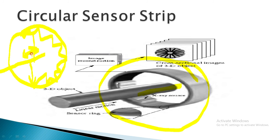Such an arrangement we have already seen from the previous classes — it was seen in your CAT machines, which is nothing but CT scan machines, which stands for Computerized Axial Tomography, if you have studied in detail in the previous classes.